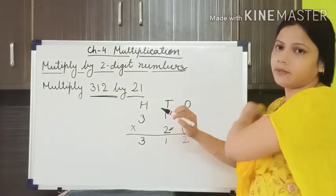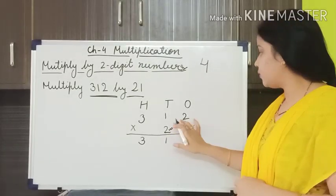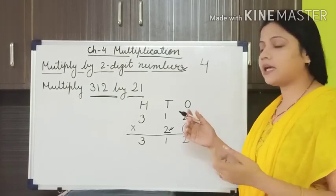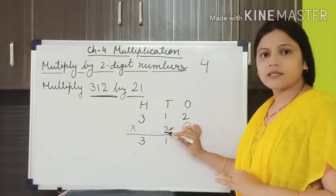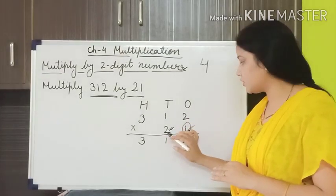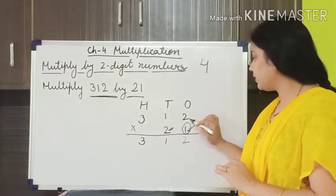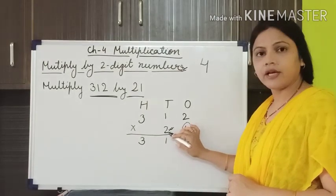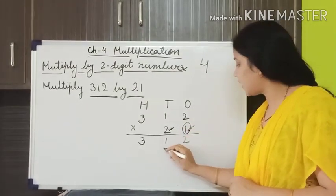So start multiplication. 2 twos are 4. But where should I write the 4? This number is at the 10s position and this number is at the 1s position. Remember: from whichever place we start our multiplication, we have to write the answer starting from that place — just the 0 of that place. This number was placed at the 1s position, so when we started we wrote from the 1s place. Now, since we are multiplying at the 10s position, we will start our writing from the 10s place. So this 4 we have to write here.